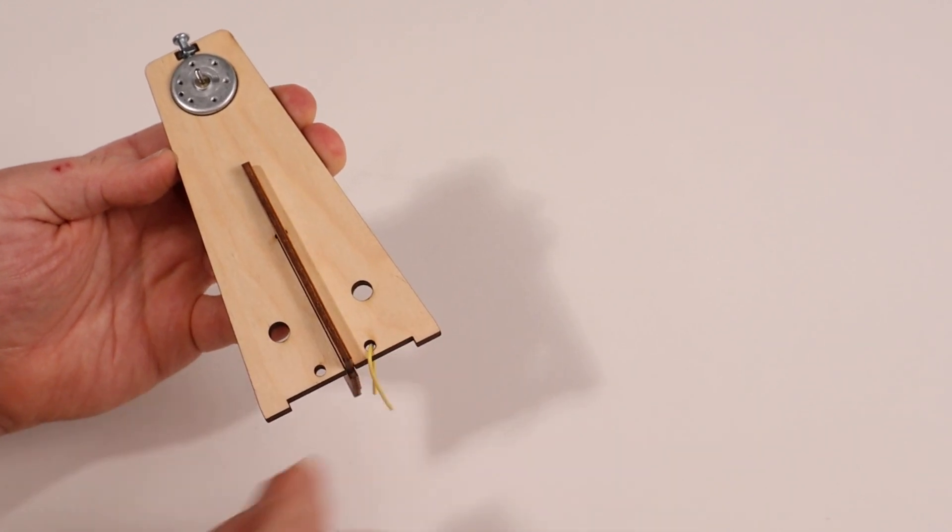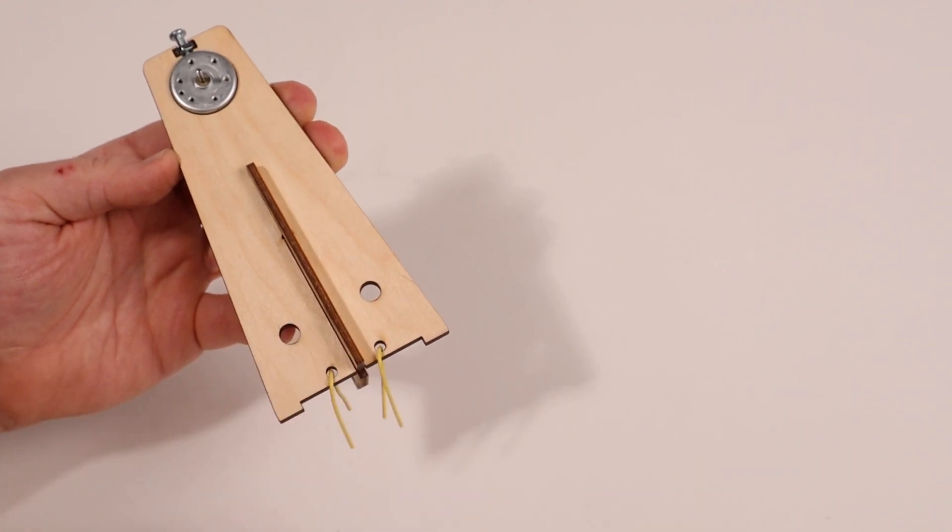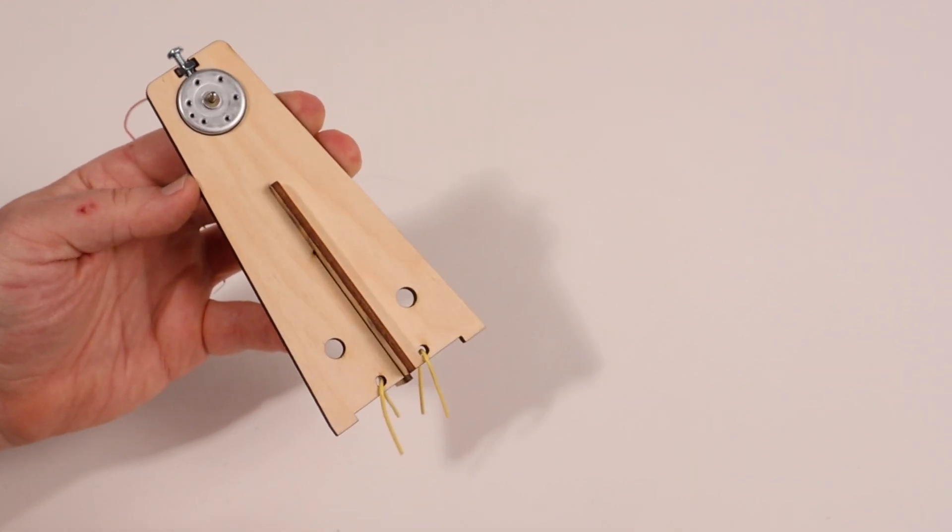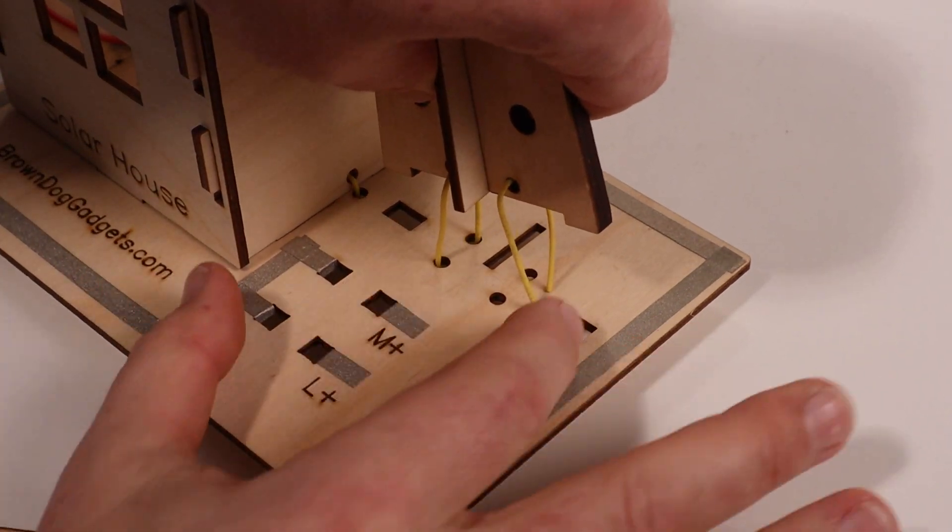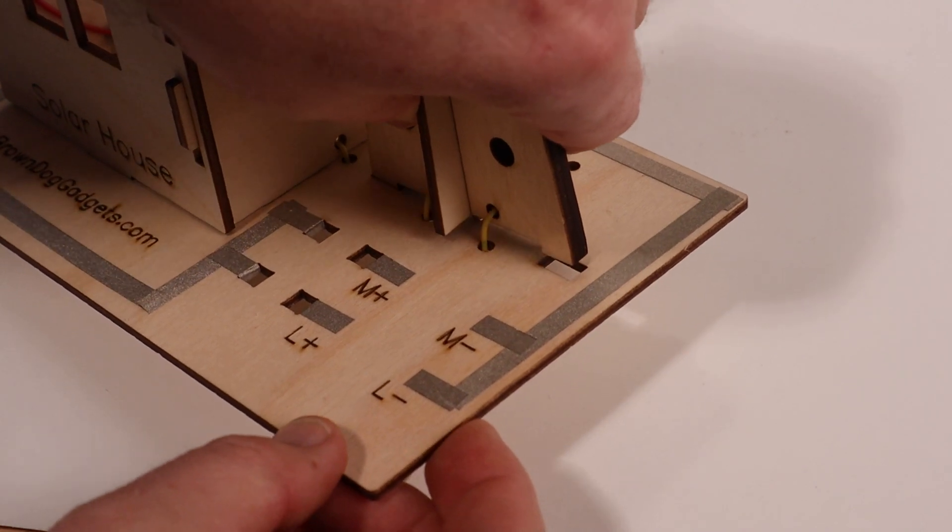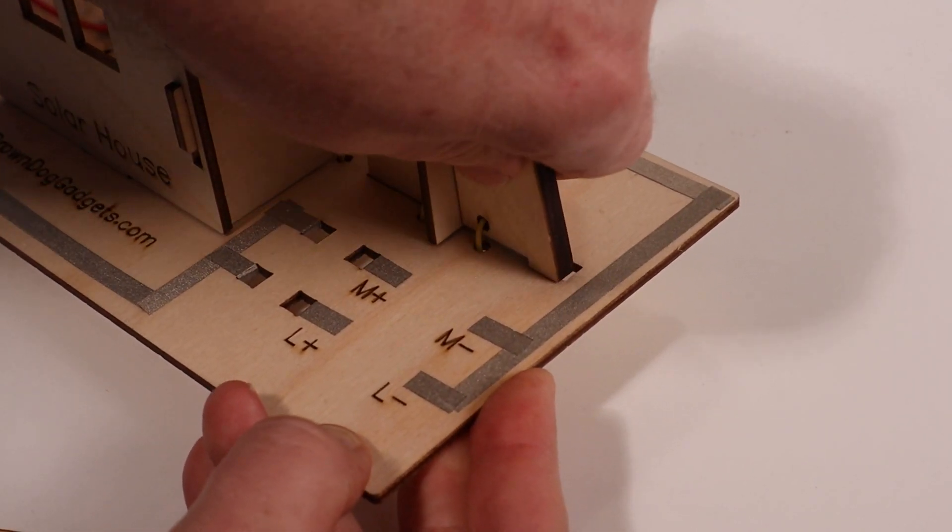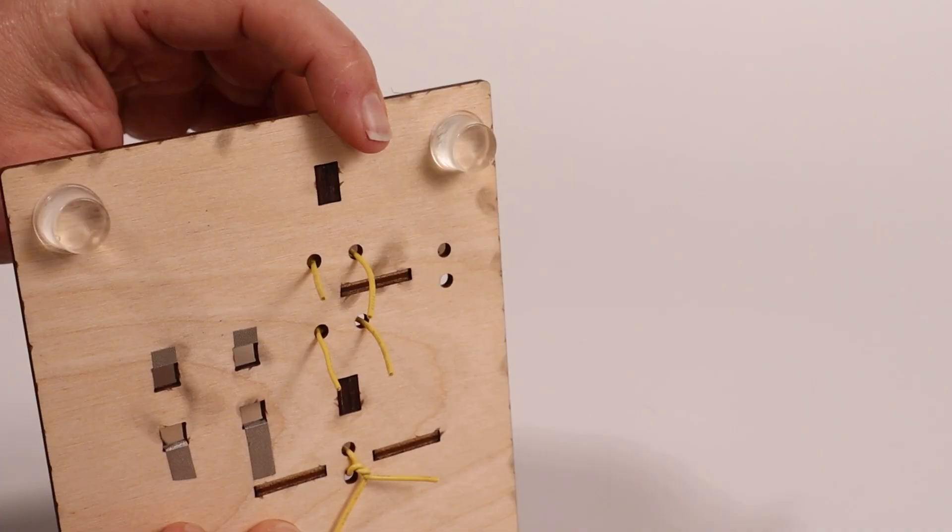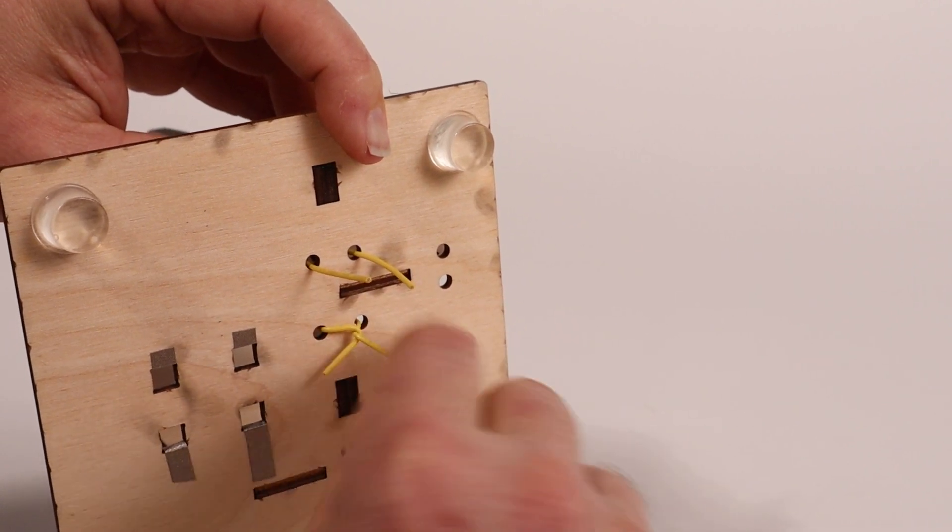The tower is held to the base with several short pieces of wire. Bend them into a U-shape and put them through the two holes on the base of the tower. Then place the tower into the slots on the base. The tower goes into the slots on the base and the wires go through the round holes. On the bottom side of the base, twist the wires to hold the tower in place.